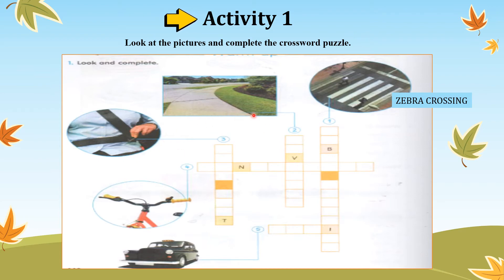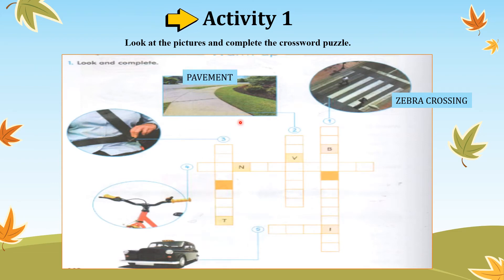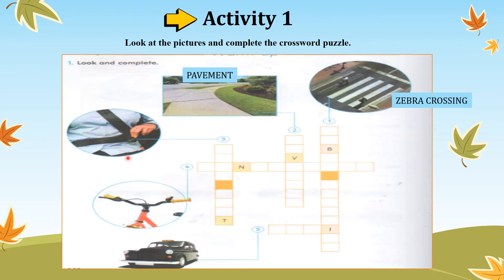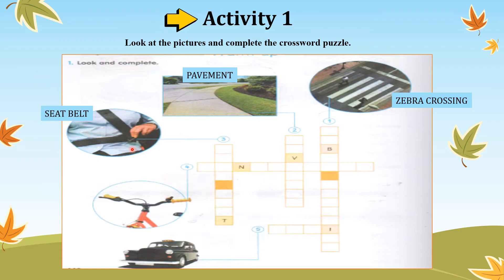Let's move on to number 2. What do we call this thing? We need to walk on this, not on the road. This is a pavement. Then let's move on to number 3. What do we call this thing? We have to use this when we're in a car. This is a seatbelt.